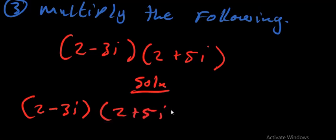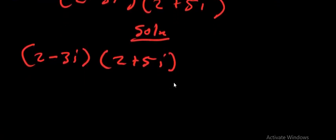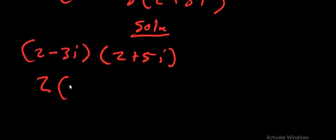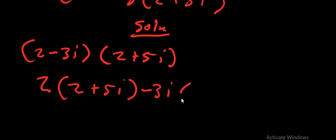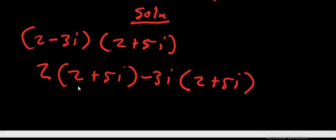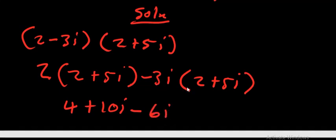After writing that, we multiply 2 by everything in the second bracket: 2(2 + 5i), then multiply −3i by everything in the second bracket: −3i(2 + 5i). This gives us 2 × 2 = 4, then 2 × 5i = +10i, then −3i × 2 = −6i, and −3i × 5i = −15i².